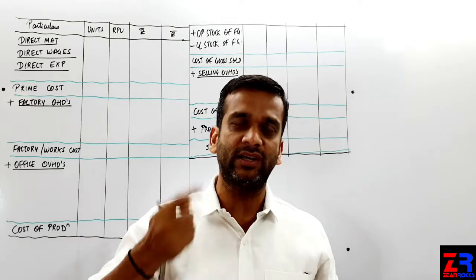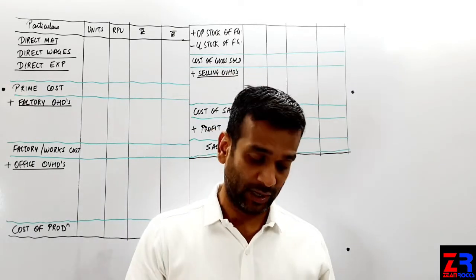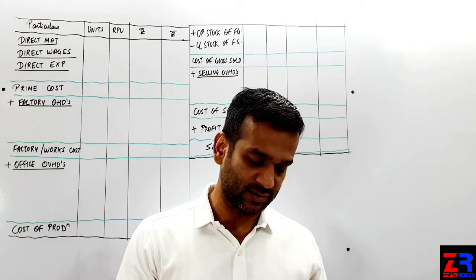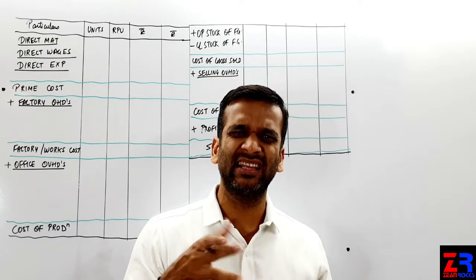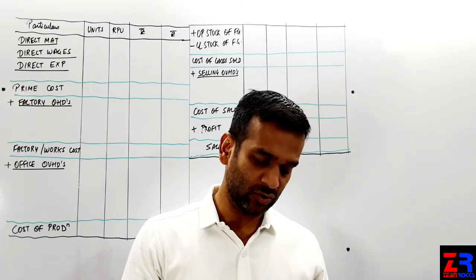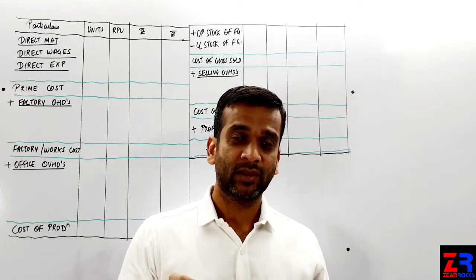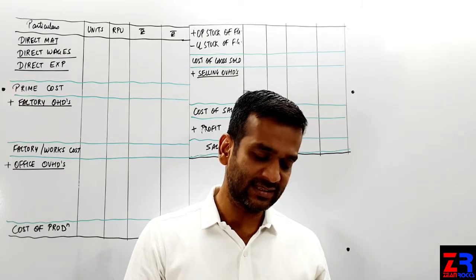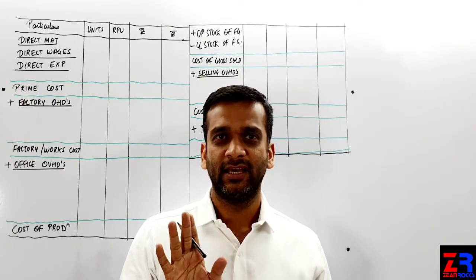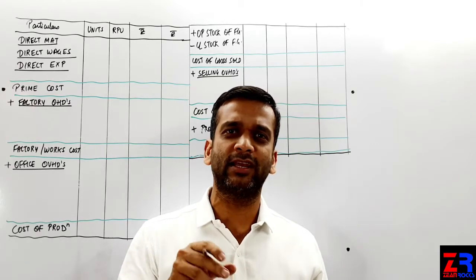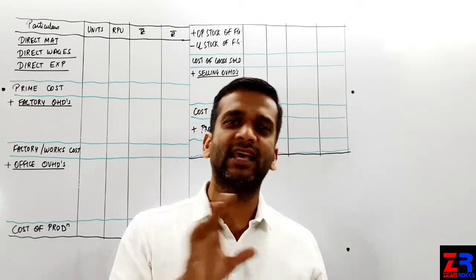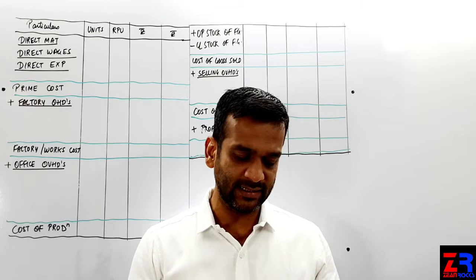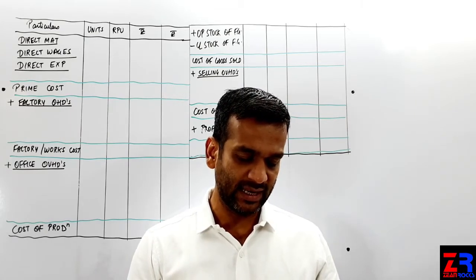Demonstration expense is demonstrating the product, advertising the product, so it is selling overhead. Direct expense is direct expense. General manager is working in office. Work manager is in factory. Dividend paid is a financial expense, so finance related. Hence, there is no cost. Whenever dividend is paid, we don't include it in the cost sheet. We have to ignore it. Direct wages is direct wages. Work manager salary is factory overhead. Advertising is selling overhead.